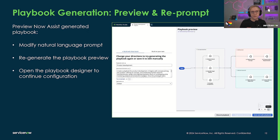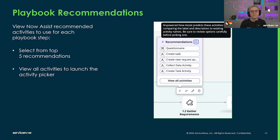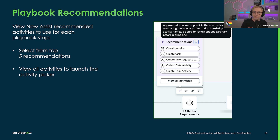Just like flow generation, playbook generation now also has a preview and re-prompt feature. This lets you modify the natural language prompt and regenerate the playbook before proceeding. Whether your playbook was generated by NowAssist or drafted by a business process owner, replacing placeholder activities will be the next step when developing a playbook. Inline recommendations help identify matching activity definitions or automation assets, which streamlines the authoring process and improves productivity.